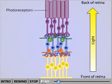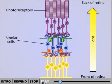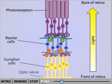Light activates the photoreceptors, which modulate the activity of bipolar cells. These cells, in turn, connect with ganglion cells located at the front of the retina. The axons of the ganglion cells form the optic nerve, which carries information to the brain.